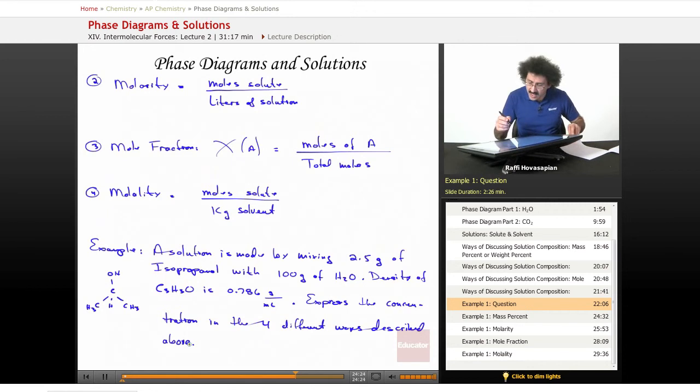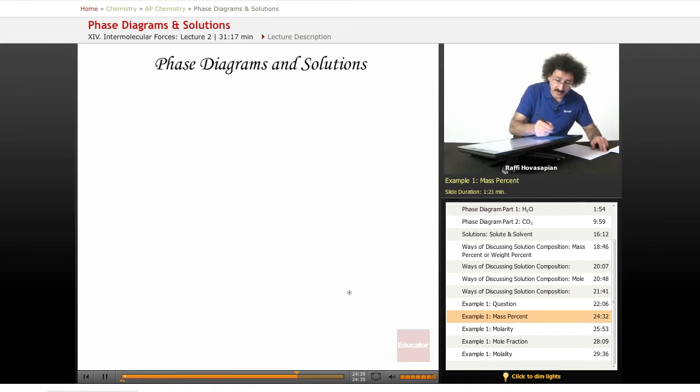So once again, we have 2.5 grams of isopropanol, which is a liquid, mixed with 100 grams of H2O, also a liquid. Let's go ahead and do our first one, which is mass percent.